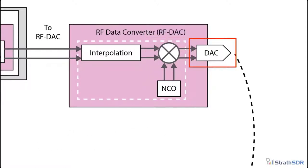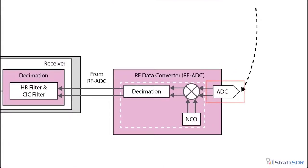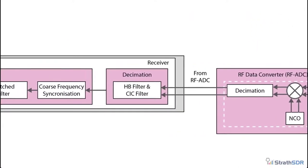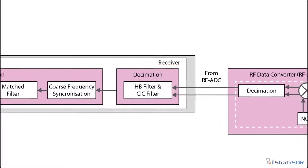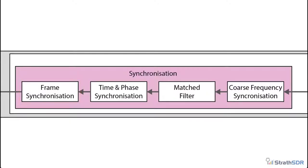As soon as the signal reaches the DAC, it is converted to the analog domain for transmission. In our system, we will simply loop back the transmitted signal so that it can be easily received. At the receiver, RF signals are acquired using the RF analog-to-digital converter. The received RF signal is initially demodulated by mixing down to baseband from a selected carrier frequency using the local NCO. The signal then undergoes three half-band decimation stages to reduce its sample rate by a factor of 8. In the FPGA logic fabric, the signal undergoes further decimation, then passes through coarse synchronization, time synchronization, phase synchronization, and frame synchronization stages, which are essential to extract the transmitted message. We will explore these further in part 2.